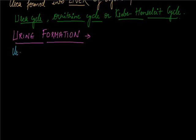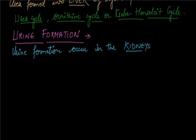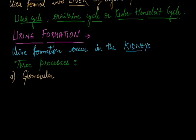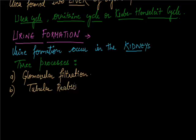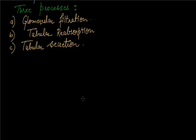Urine formation occurs in the kidney and involves mainly three processes. The first process is glomerular filtration, next is tubular reabsorption, and the last one is tubular secretion. These three are the main processes through which urine formation occurs inside the kidney.